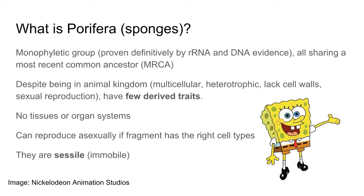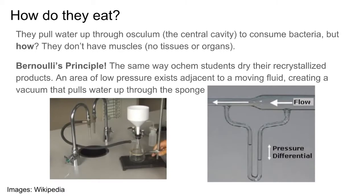A key point is that sponges do have asexual means of reproduction. If a large enough piece of a sponge is broken off and that fragment has the correct cell types, the sponge can regenerate back into a fully functional organism. Also, sponges are sessile — a fancy way of saying they don't move; they're fixed in place.